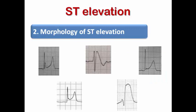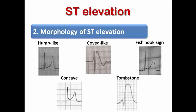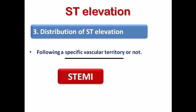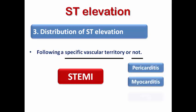Number two is the morphology of ST elevation. Hump-like ST elevation suggests hypothermia; cove-like ST elevation suggests Brugada syndrome; fish-hook sign occurs in early repolarization; concave ST elevation may suggest pericarditis; tombstone appearance is very suggestive of STEMI with high risk of mortality. Sometimes the morphology alone can guide you to the cause. Number three is the distribution of ST elevation — whether it follows a specific vascular territory. If it follows a vascular territory such as anterior or inferior leads, this suggests STEMI. If it does not follow any vascular territory, suspect non-vascular causes like pericarditis, myocarditis, or Takotsubo syndrome.